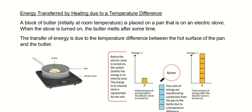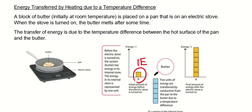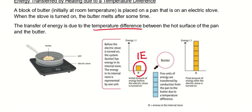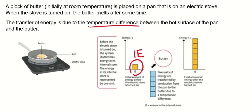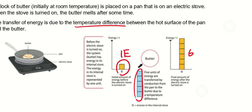Energy transfer by heating due to a temperature difference: a block of butter at room temperature has one unit of internal energy. When placed on a hot pan on an electric stove, energy is transferred by conduction due to the temperature difference. Five units are transferred in from the stove, giving a total of six units of internal energy in the butter.